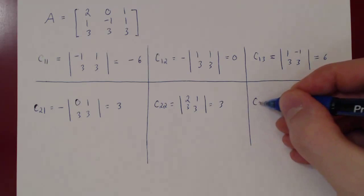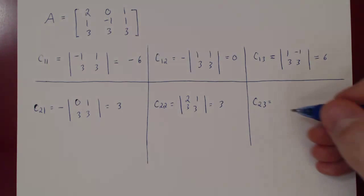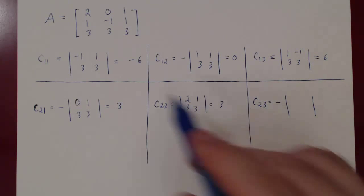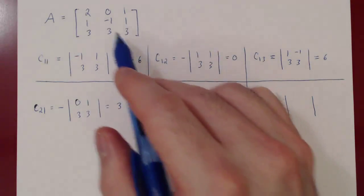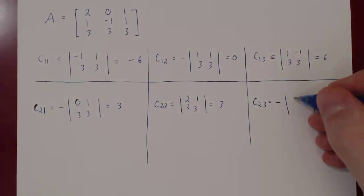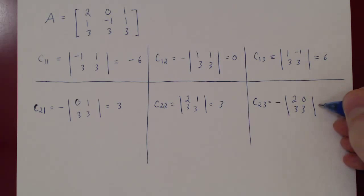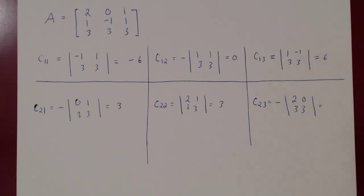And finally C23: 2 plus 3 is 5, which is odd, so we do get a negative. We delete row 2, column 3, and you get the matrix 2, 0, 3, 3. The determinant is 6 minus 0, which is 6, but there's a negative in front, so we get negative 6.